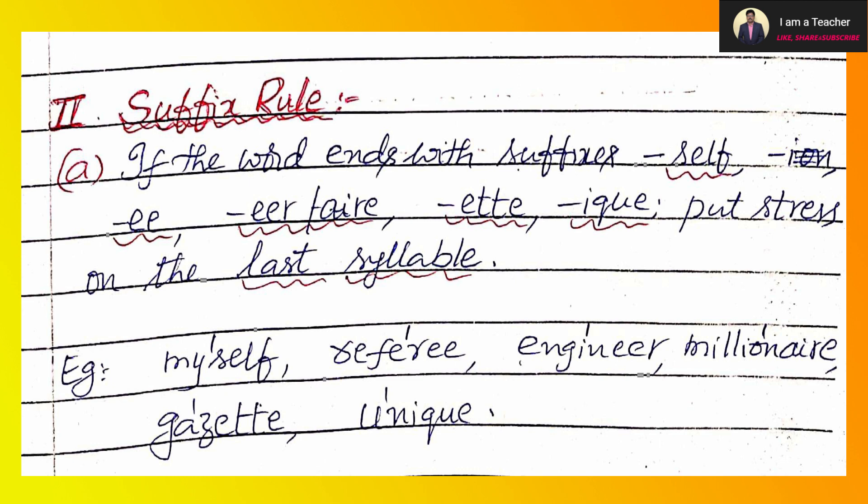First, divide the word into syllables. For example, 'myself' — my / self — as per the rule, put stress on the last syllable 'self'. 'Referee' — re / fer / ee — last syllable is 'ee', so stress on 'r' of 'ee'. 'Engineer' — last syllable is 'neer', stress on 'n'. 'Millionaire' — mil / li / on / aire — last syllable 'aire', stress on 'n'. 'Gazette' / 'cigarette' — stress on last syllable, on 'r'. 'Unique' — u / nique — stress on 'n'.